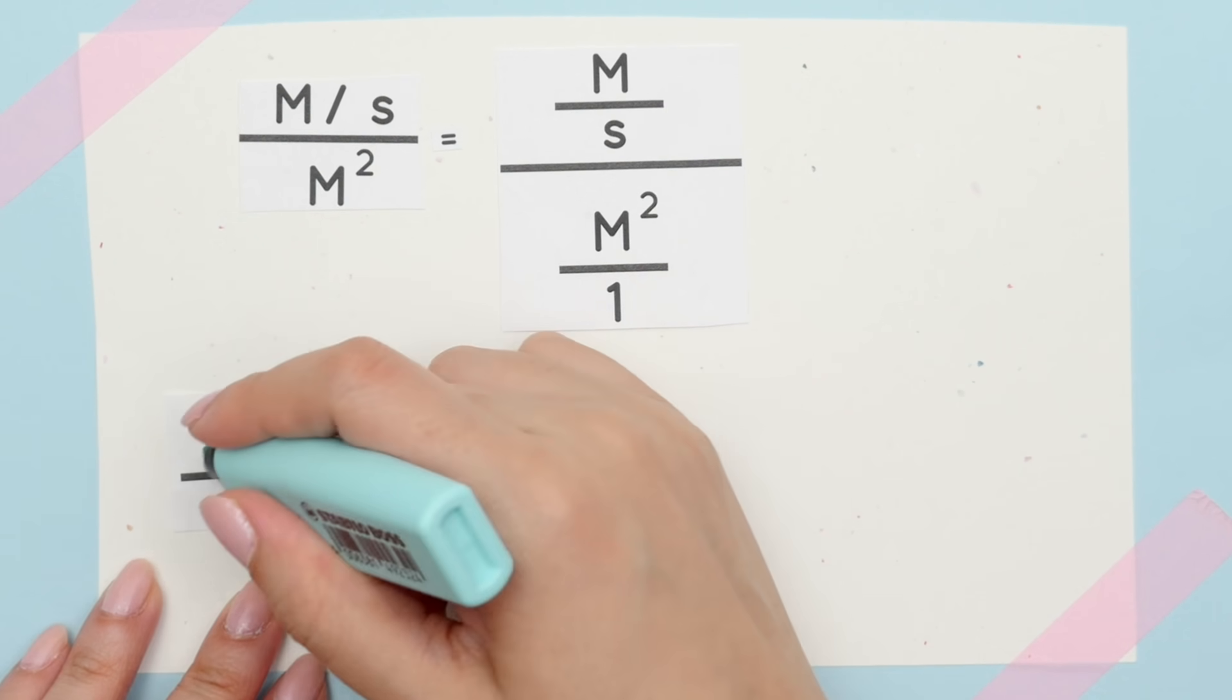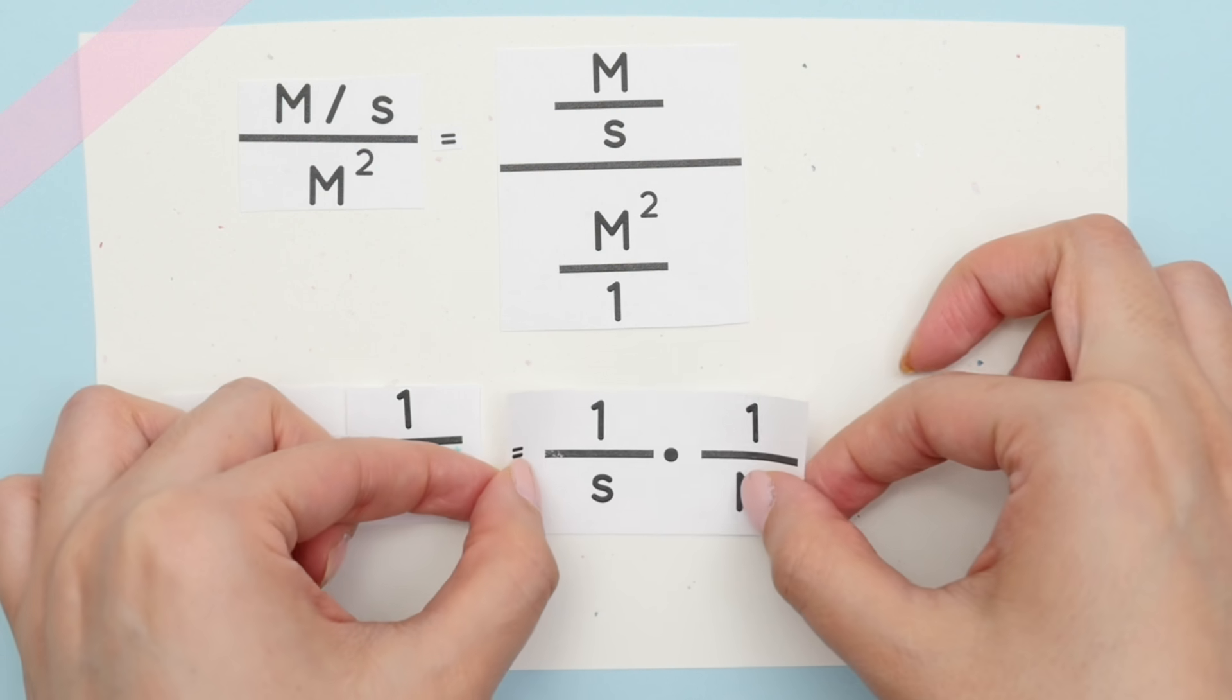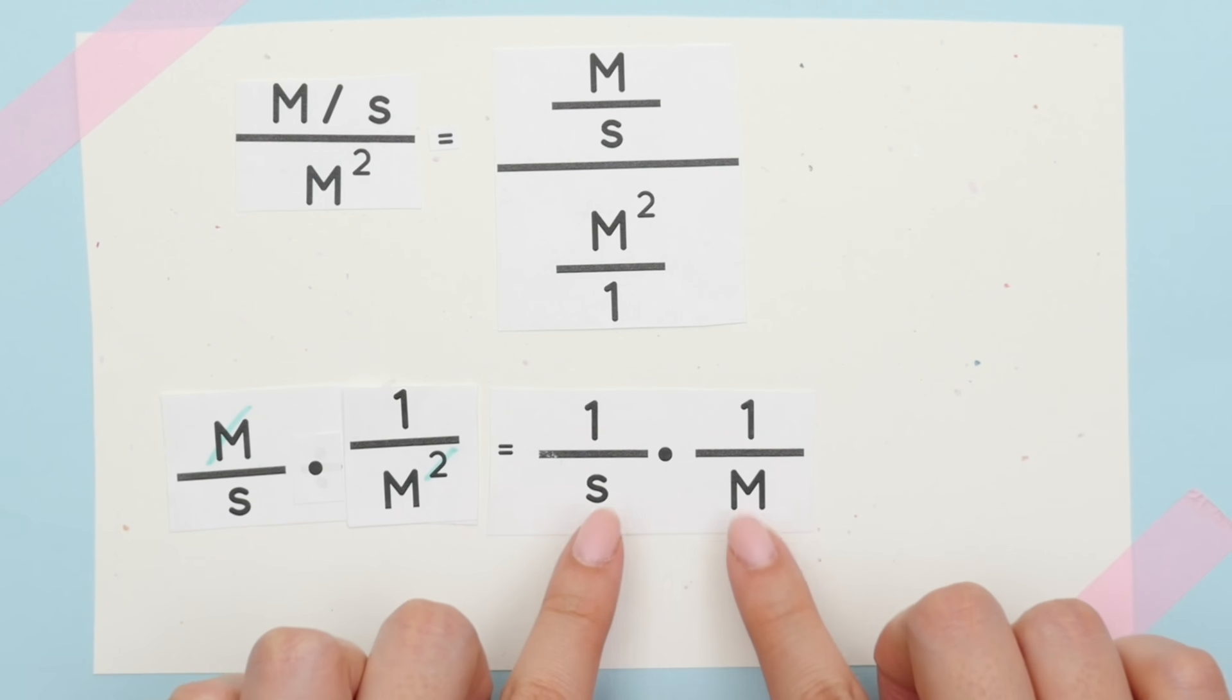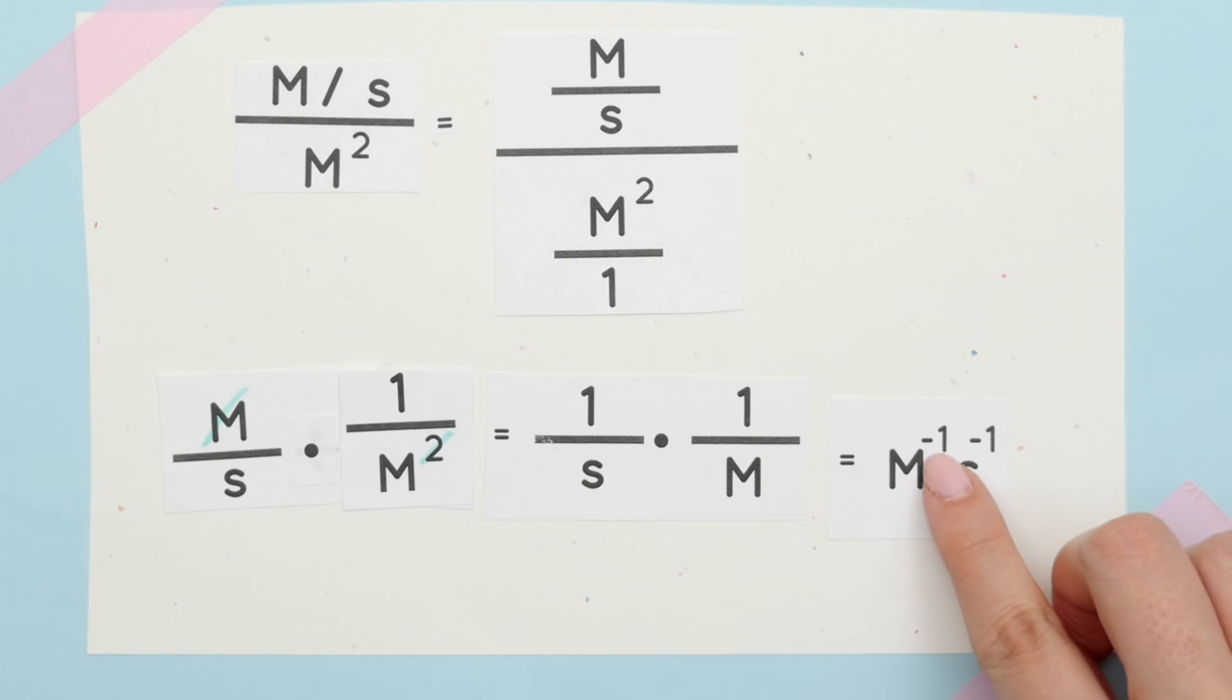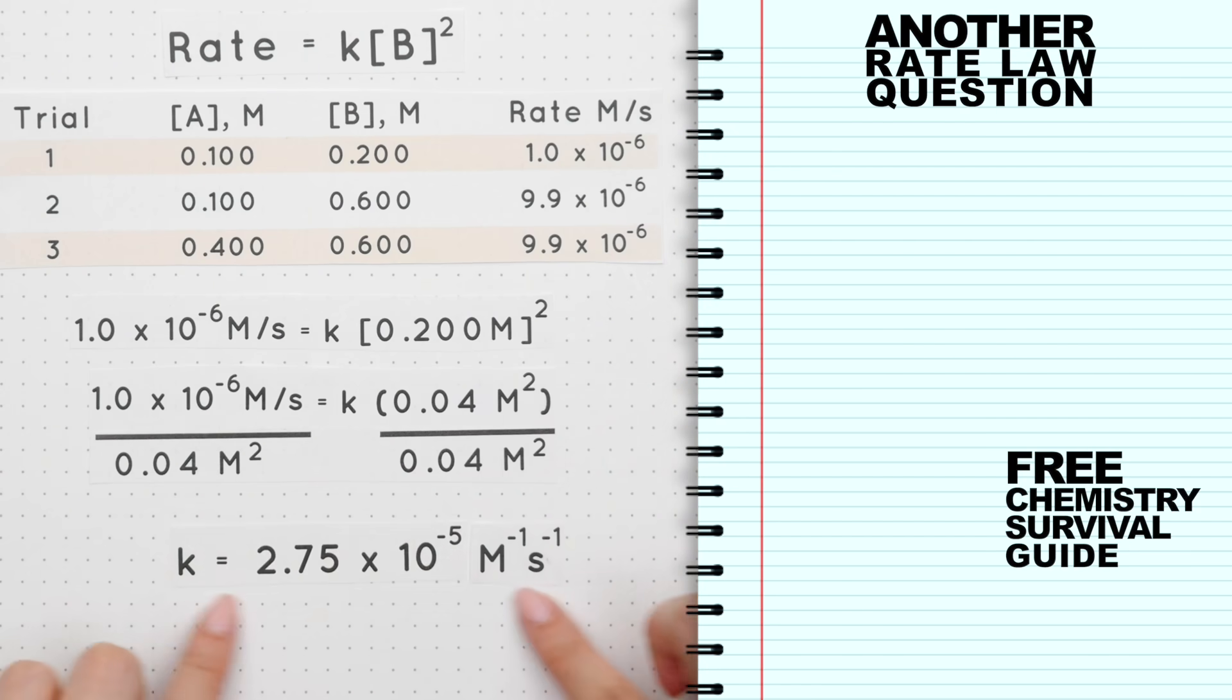1m cancels and we are left with 1s and 1m on the bottom, which can be rewritten to m to the negative first and s to the negative first. So this is our rate constant with the proper units.